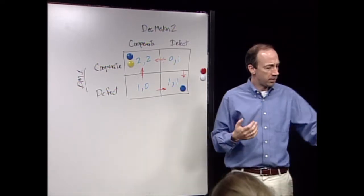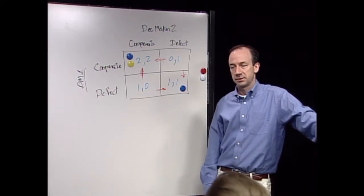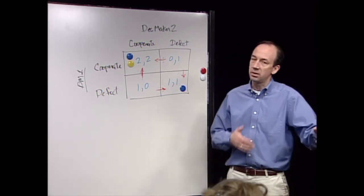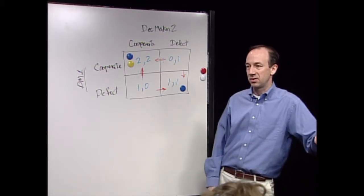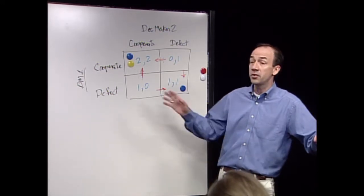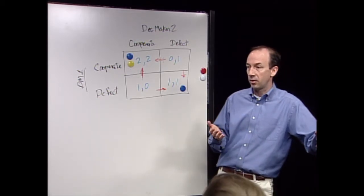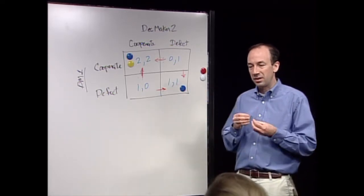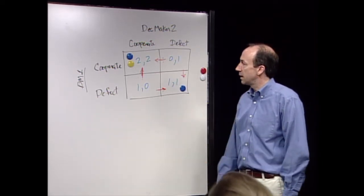On the other hand, if you choose to defect, defecting is riskless - you know you're going to get at least 1. It doesn't matter what the other person gets. So you've got a Pareto optimal Nash equilibrium and a riskless Nash equilibrium. The smart thing to do is cooperate - unless you're a risk-averse decision maker, in which case you should defect. When you look at these games this way, there's no easy answer - it really depends on what the other person is going to do.